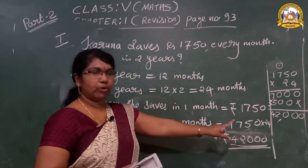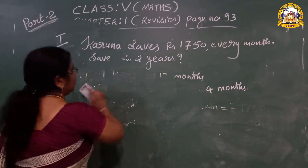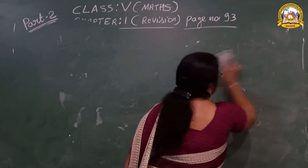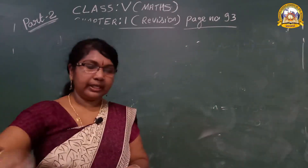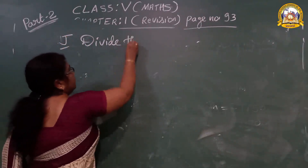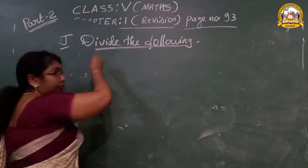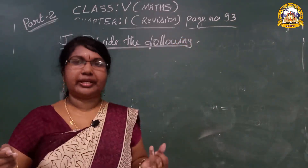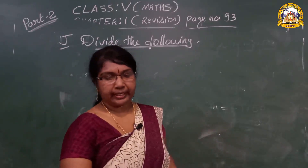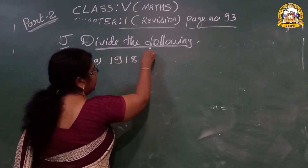If doing multiplication, you can make boxes and do it. Now for the next question — look at page number 93. Question number J: divide the following. You studied division last year. Are you remembering the division? How many digits of division did you study? Up to three digits.